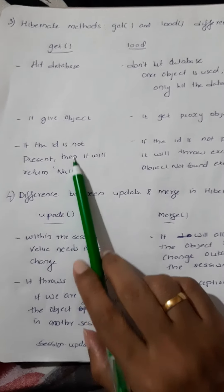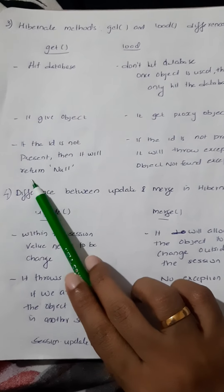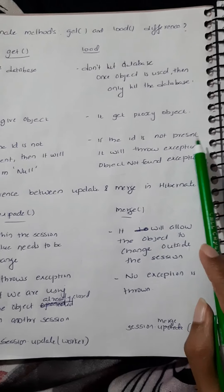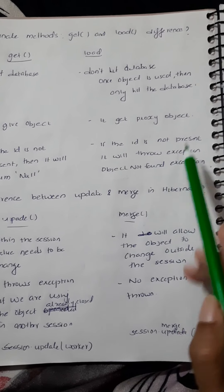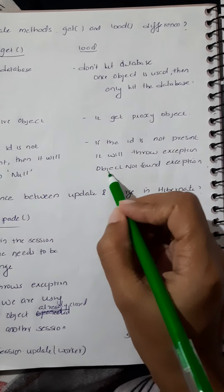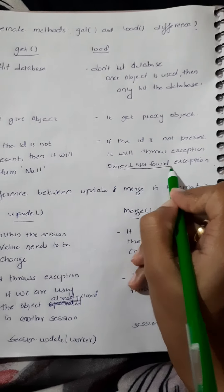When we get the ID, we will return the ID. At that time we will return the value. In that case, there will be no exception.